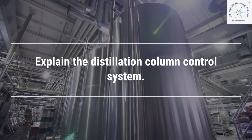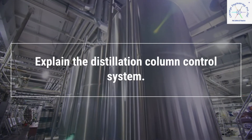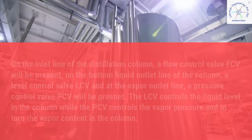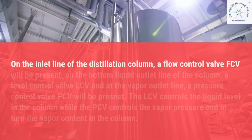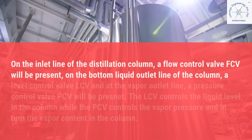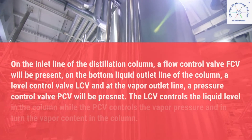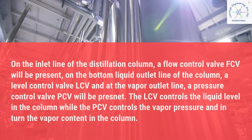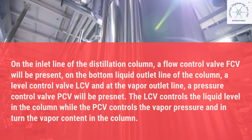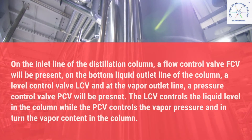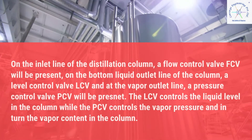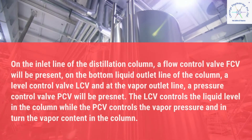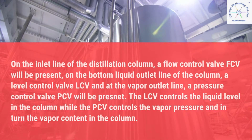Explain the distillation column control system. On the inlet line of the distillation column, a flow control valve FCV will be present. On the bottom liquid outlet line, a level control valve LCV, and at the vapor outlet line, a pressure control valve PCV will be present.